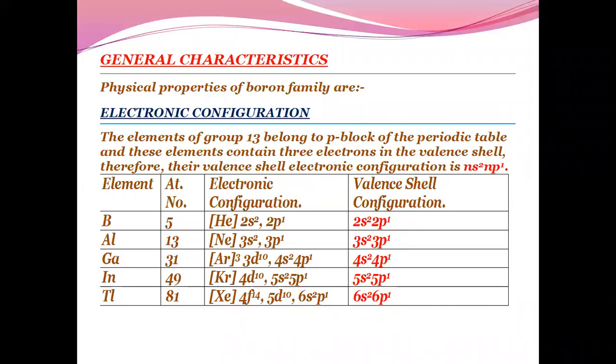Talking about the general characteristics and physical properties of the Boron family, electronic configuration: the elements of group 13 belong to the P-block of the periodic table and these elements contain three electrons in their valence shell.